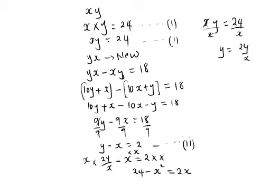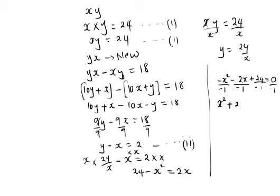Then we collect the like terms together. We will have negative x squared minus 2x plus 24 being equal to 0. We divide by negative 1 to make the coefficient of x squared positive. And this gives us x squared plus 2x minus 24 being equal to 0.